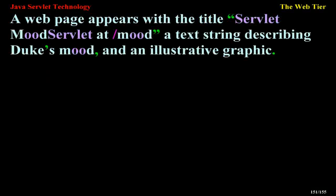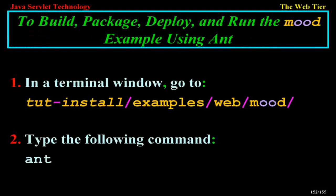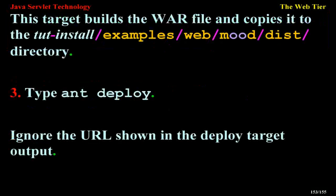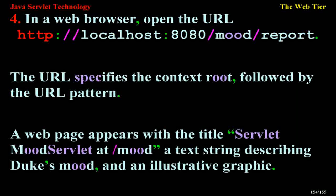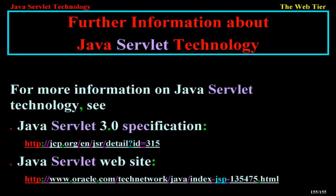A web page appears with the title 'Servlet MoodServlet at mood', a text string describing Duke's mood, and an illustrative graphic. To build, package, deploy, and run the mood example using Ant: in a terminal window, go to tut-install/examples/web/mood. Type the following command: 'ant' — this target builds the WAR file and copies it to the tut-install/examples/web/mood/dist directory. Then type 'ant deploy'. In a web browser, open the URL http://localhost:8080/mood/report. A web page appears with the title 'Servlet MoodServlet at mood', a text string describing Duke's mood, and an illustrative graphic.